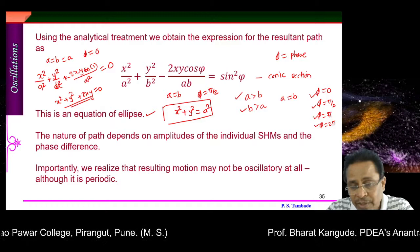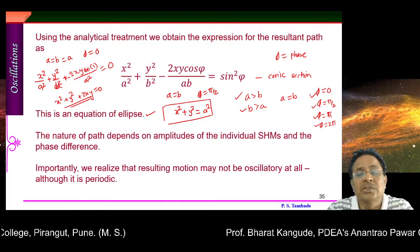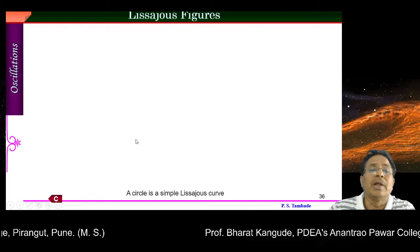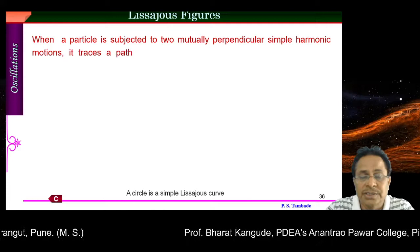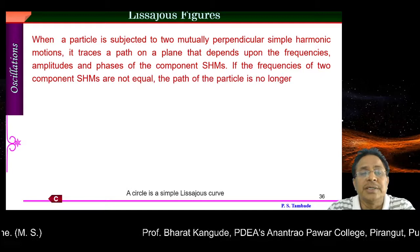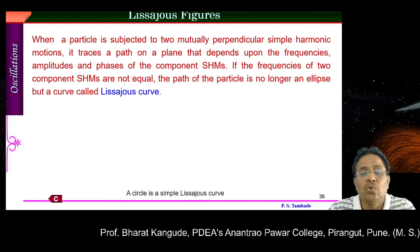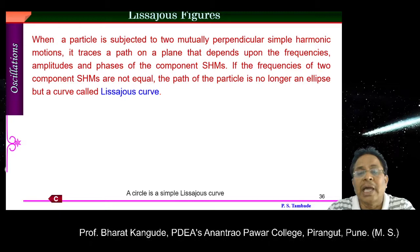This discovery by Lissajous is based on analysis of different amplitudes and different frequencies. Note that we have taken only two SHMs — if three, four, or more SHMs are present, again the resultant will be different, and innumerable types of figures can be generated, all called Lissajous figures. When a particle is subjected to two mutually perpendicular simple harmonic motions, it traces a path on a plane that depends upon the frequencies, amplitudes, and phases of the component SHMs.